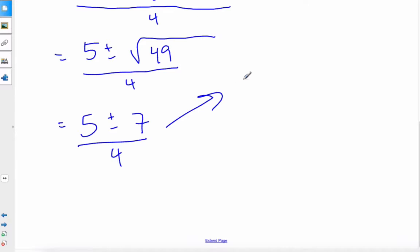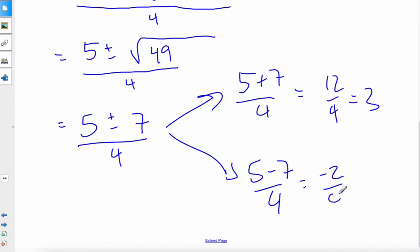So now I get 2 answers. I get 5 plus 7 over 4, and I get 5 minus 7 over 4. That's 12 over 4, which is 3, or I get negative 2 over 4, which is negative 1 half.